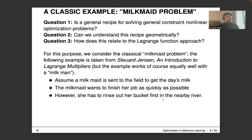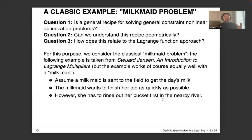Is there a general recipe for solving constrained nonlinear optimization problems, potentially convex or non-convex? Can we understand this geometrically by looking at a simple example, and how does it relate to the Lagrange function from linear programming? For this purpose, one interesting example is the classical milkmaid problem, as introduced by Stuart Jensen in his introduction to Lagrange multipliers—a cute little geometric example that gives the gist of the Lagrangian construction.